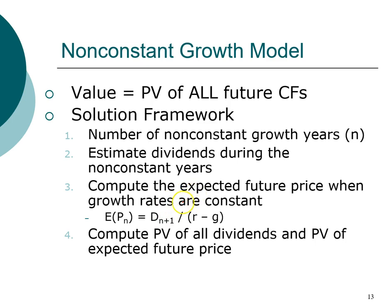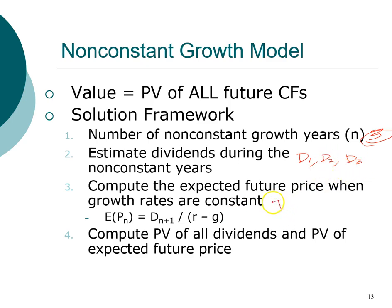Let's say we have solid information for a company over the next three years. That means we're going to estimate dividends in year one, year two, and year three. Beyond that, once we've used the information we have on hand, we will apply the constant growth model. So we forecast the price of the stock at the end of year three, and assume that starting in year four, dividends follow a constant growth rate.